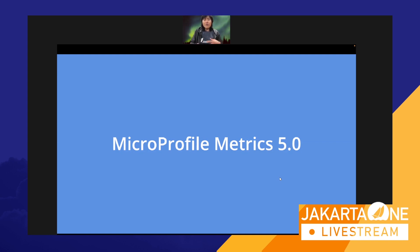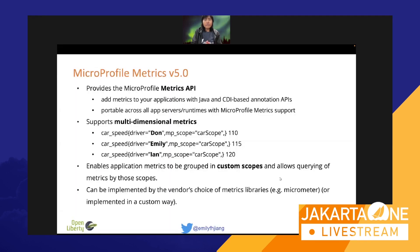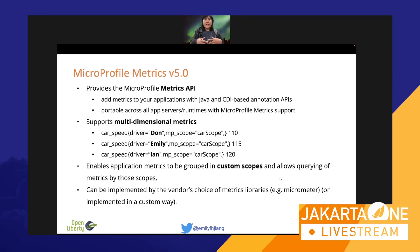Let me walk through what's in MicroProfile Metrics 5.0. It continues to provide the MicroProfile Metrics API — you can use annotations directly or programmatically via APIs, and your application remains portable among MicroProfile Metrics implementations. The second feature is support for multi-dimensional metrics, inspired by Micrometer. You can see how custom scope is supported — you can define a custom scope like 'driver' with a particular scope name and query it later.